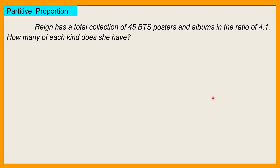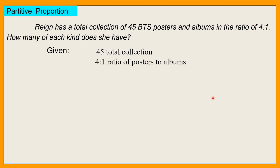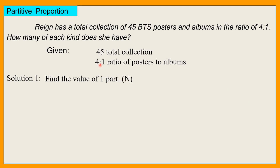So anong klaseng proportion ito? This is partitive kasi hahatiin mo itong 45 collection into 4 parts at saka 1 part — hahanapin mo kung ilan ang poster, ilan ang albums. Given: 45 total collection of posters and albums, at yung ratio is 4 is to 1, posters to albums. Solution: find the value of 1 part, which is N. So 4N plus N equals 45.